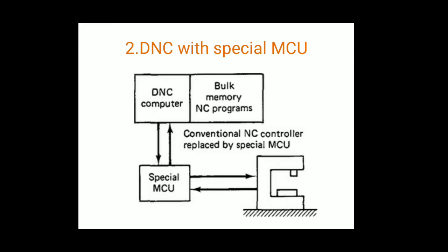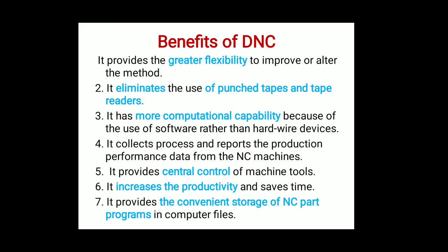The second type is the Special Machine Control Unit (MCU). Compared to the previous type, one additional part is inserted between the computer and machines — the special machine control unit. This type of DNC eliminates the regular CNC controller and replaces it with the special machine control unit. The MCU facilitates communication between the machine tool and the computer. The major work of the MCU is to communicate between the machine tools and the DNC computer.